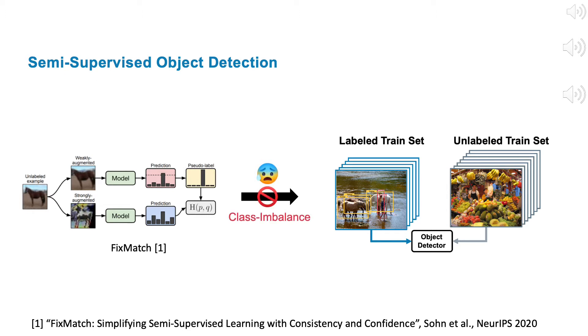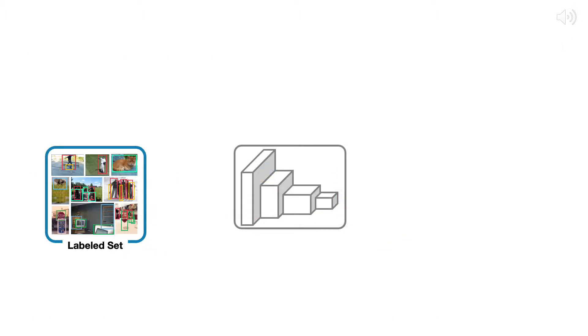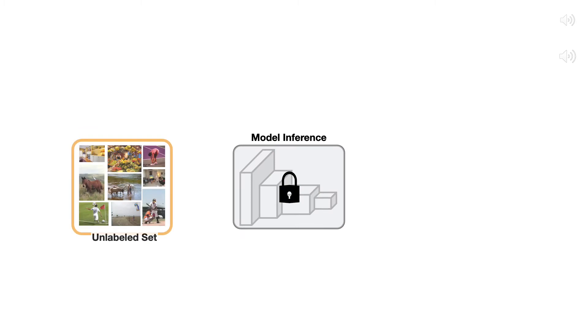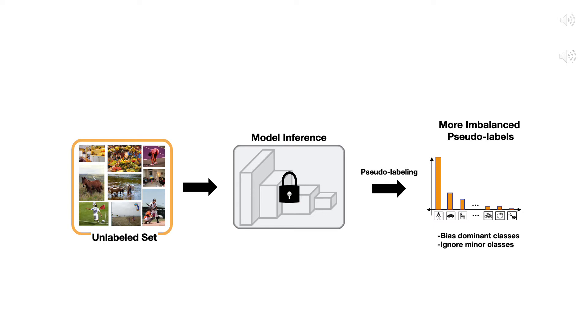However, the nature of class imbalance in object detection impedes the effectiveness of pseudo-labeling methods. To be more specific, when we use semi-supervised data to train an object detector, the model is likely to generate biased predictions, and the generated pseudo-labels may thus be biased towards the dominant classes, while ignoring minor and rare classes.